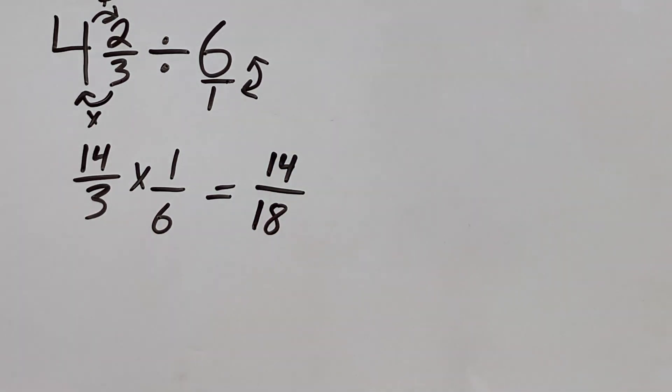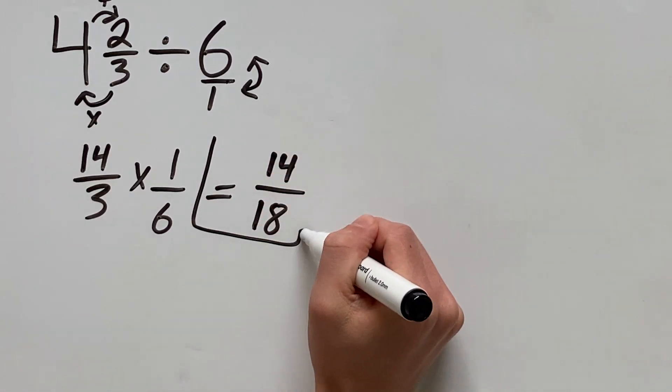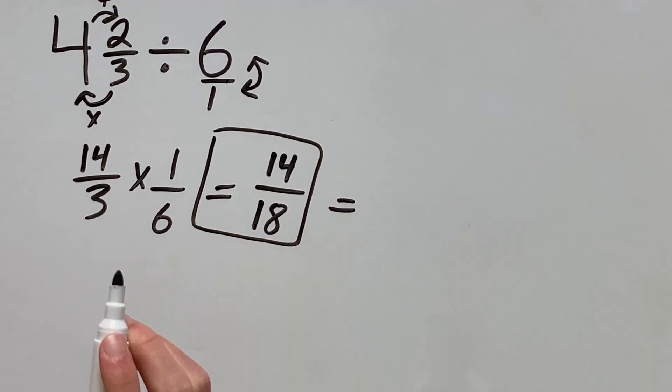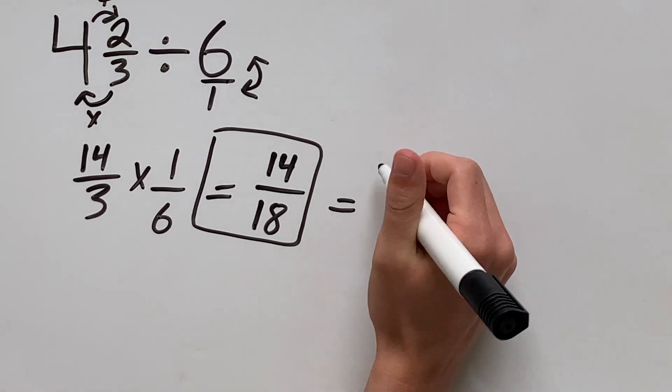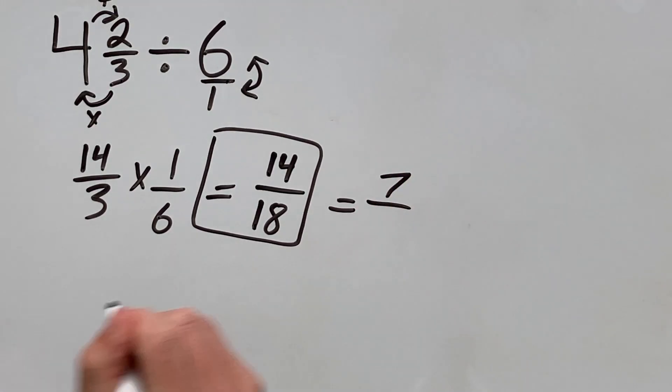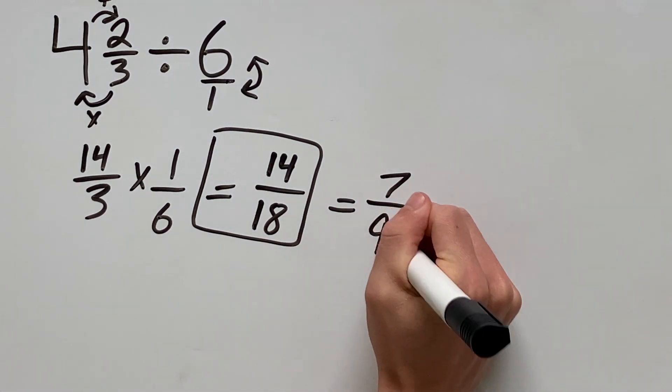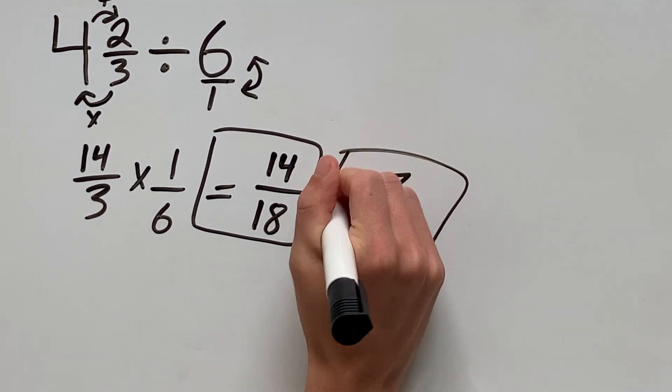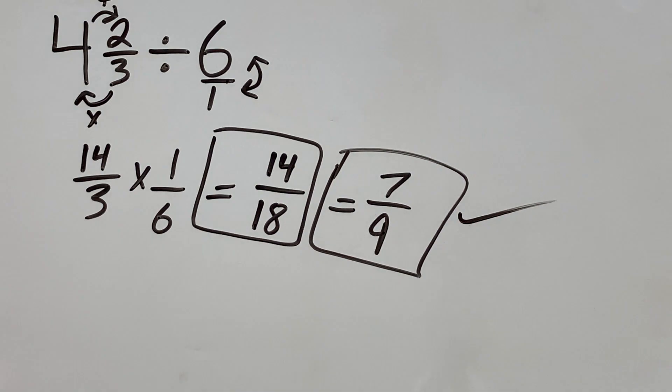Next up, this is the answer but we can still simplify this. 2 goes into both of these numbers. 2 goes into 14 seven times and into 18 nine times. So the simplified and best answer is 7 over 9.